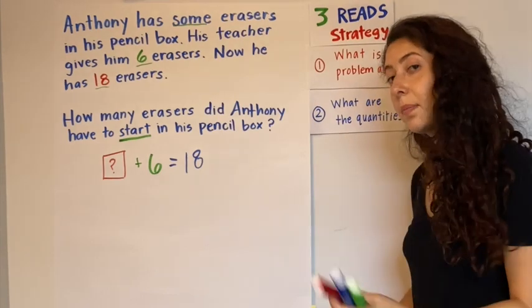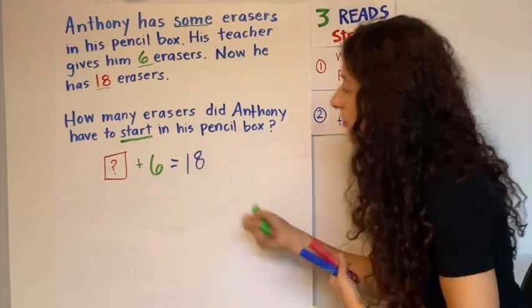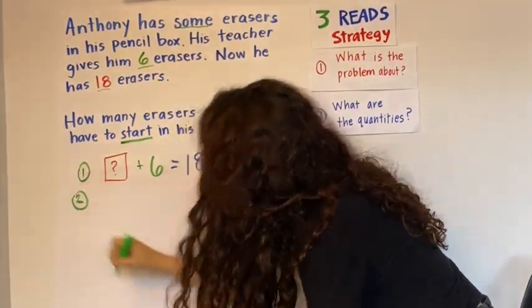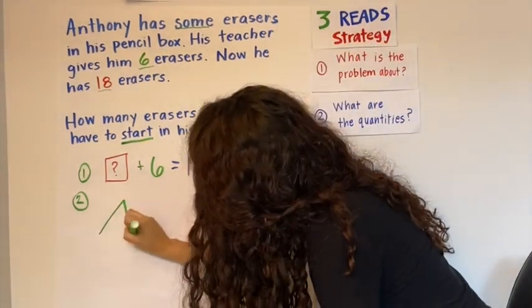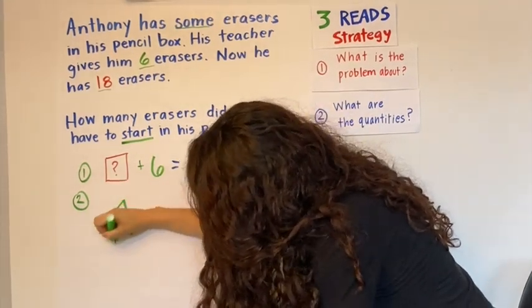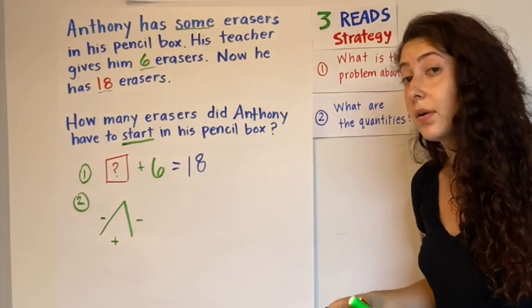My next step after writing my horizontal equation is to create a math mountain. So this is step one. Step two is our math mountains. Don't forget the math mountain face. And remember, in the math mountain, the largest number goes at the very top.